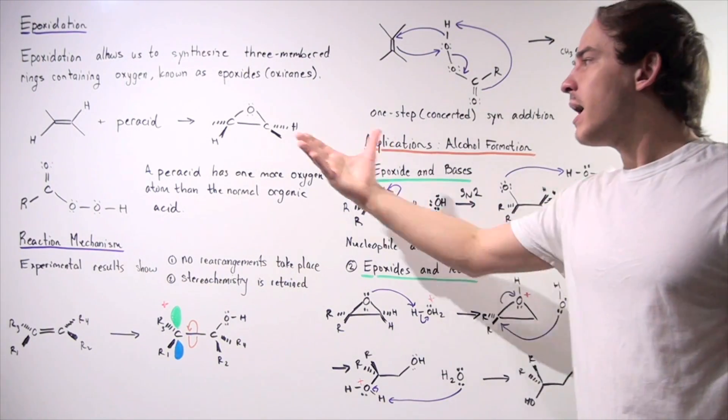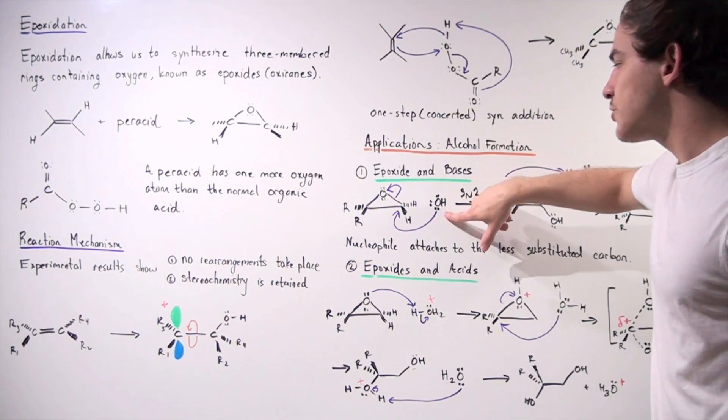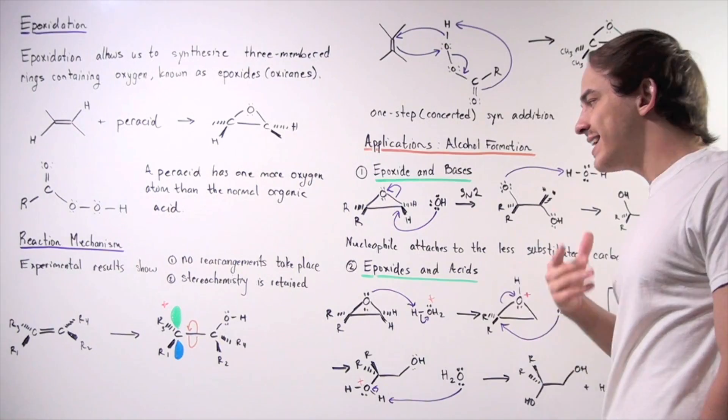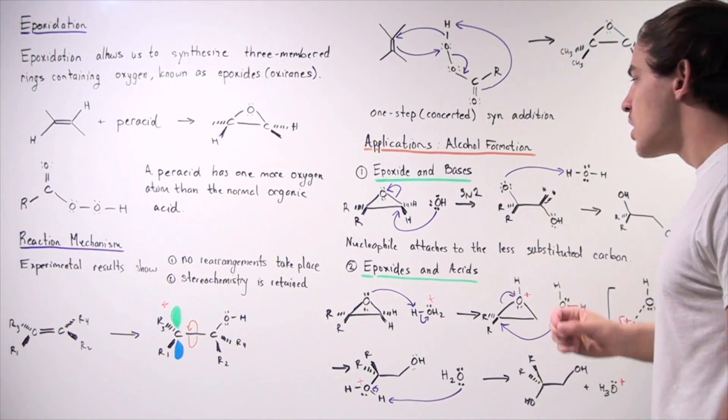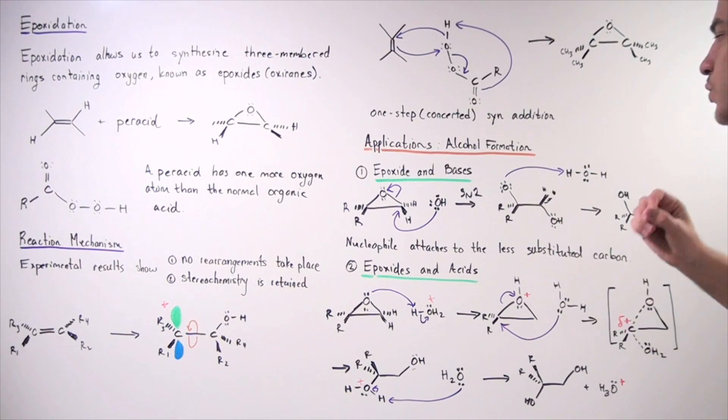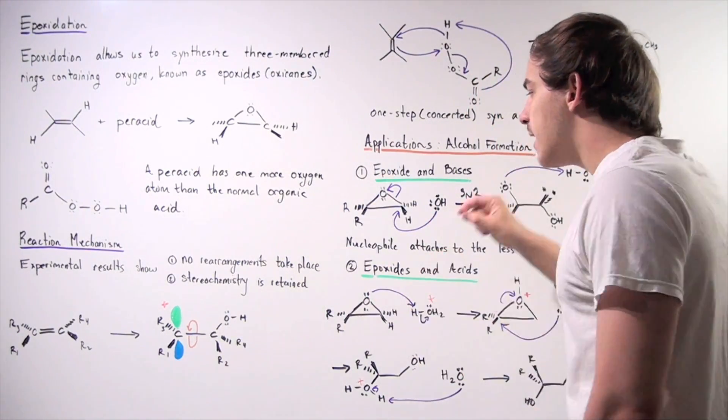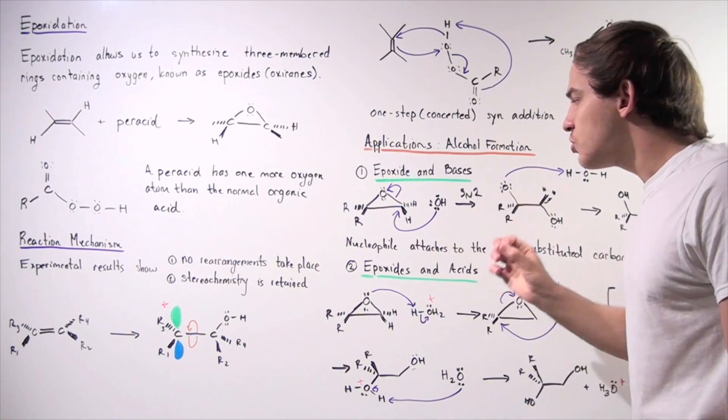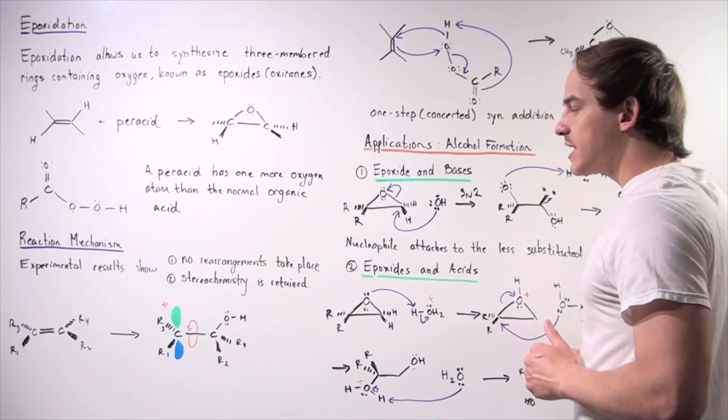Let's begin with epoxide and bases. Whenever we form an epoxide and add H2O and a base such as hydroxide, that base can act as a nucleophile in an SN2 reaction. Recall that in an SN2 reaction, our nucleophile wants to attack via a backside approach and it also wants to attack at the less sterically hindered side.